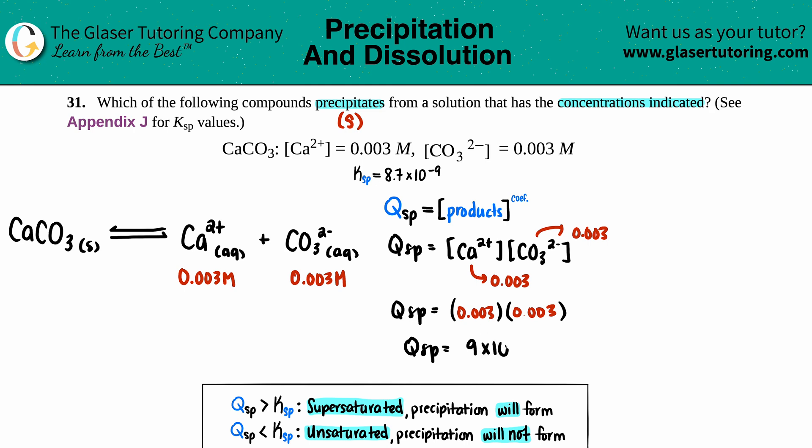Now we're going to compare the Q value that we got to the known Ksp. My Qsp value was 9 × 10⁻⁶. The known Ksp value for solubility, which we looked up in the back of the text, is 8.7 × 10⁻⁹.